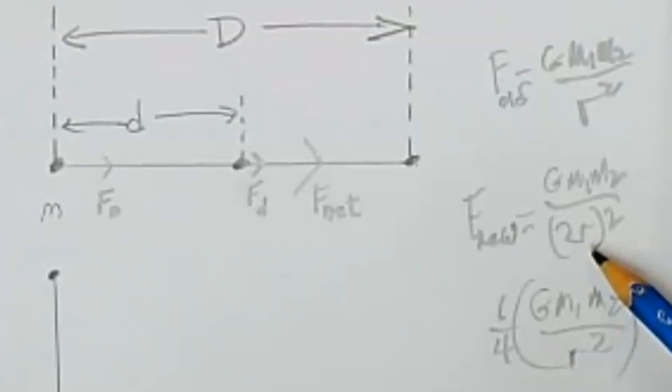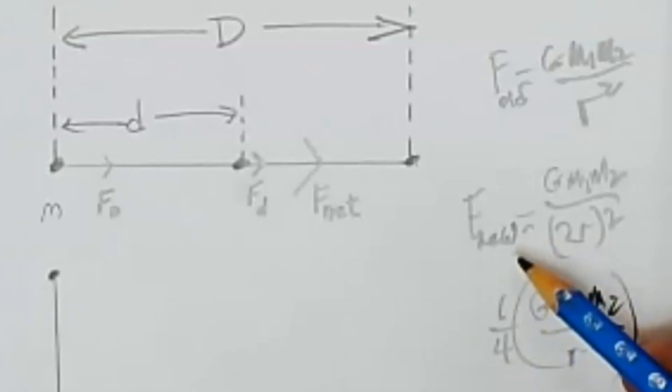Whatever factor the distance increases by, you square it, and then take the reciprocal of it, and multiply the old force times that reciprocal value, and that is your new force.